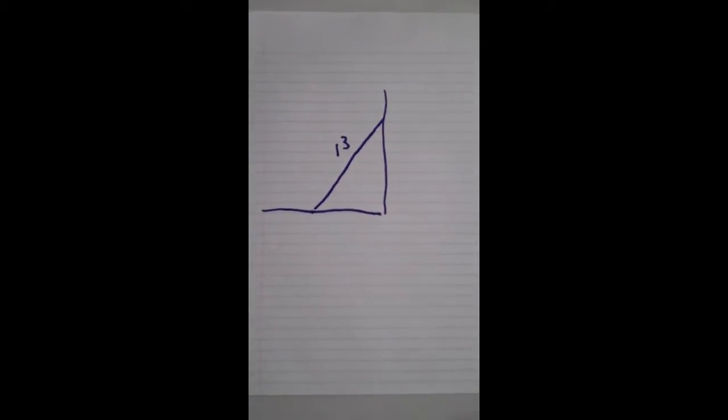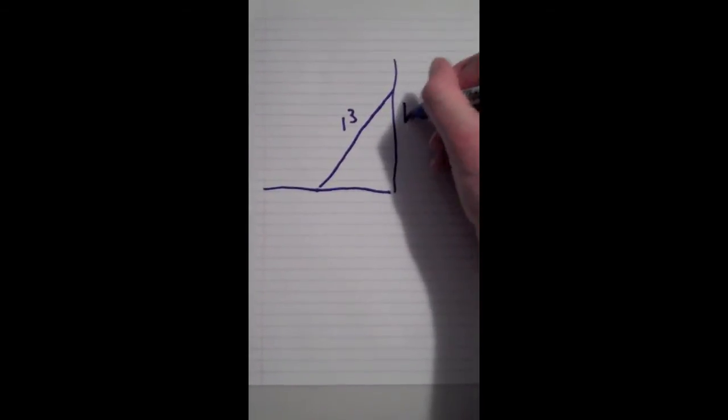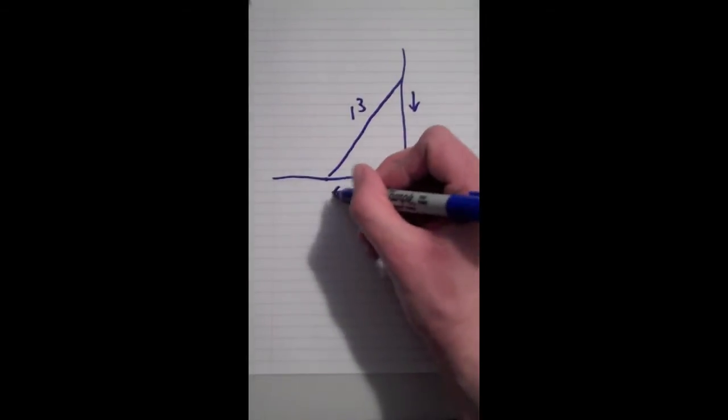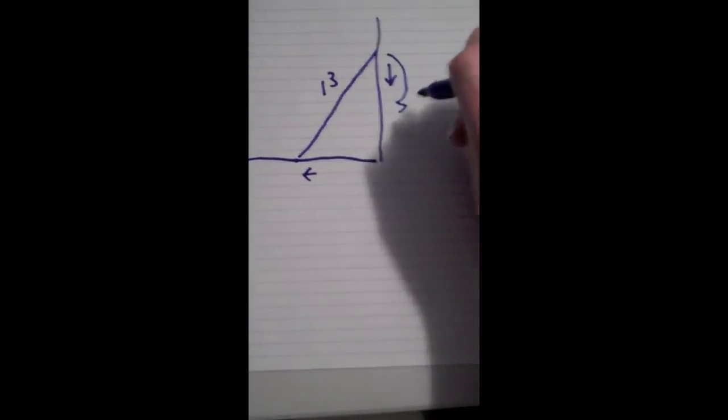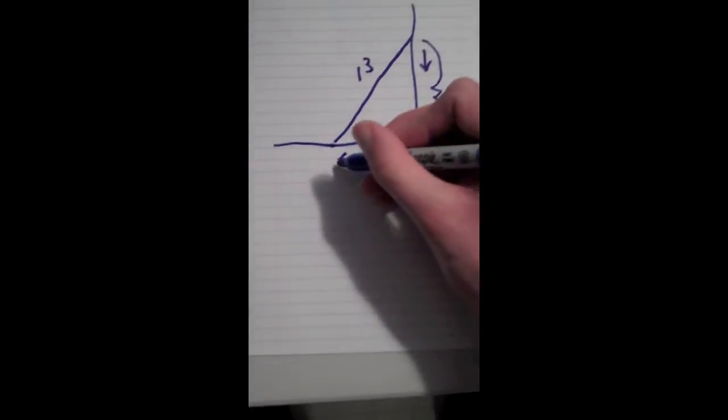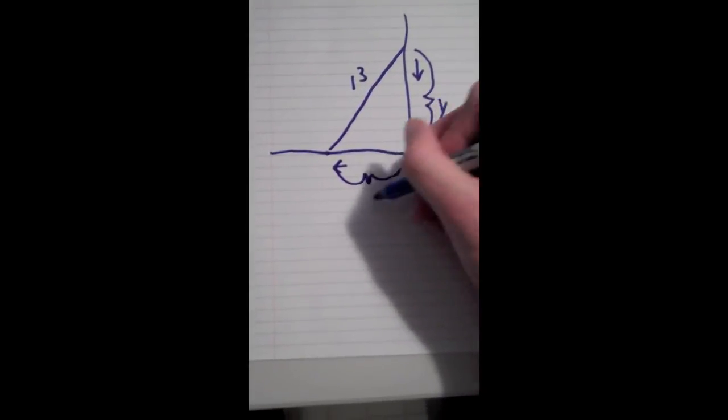And what's happening is the top of the ladder is sliding down and the bottom of it is sliding out as it falls down the wall. And I'm going to call this height of the ladder here Y and this distance of the bottom of the ladder from the wall X.